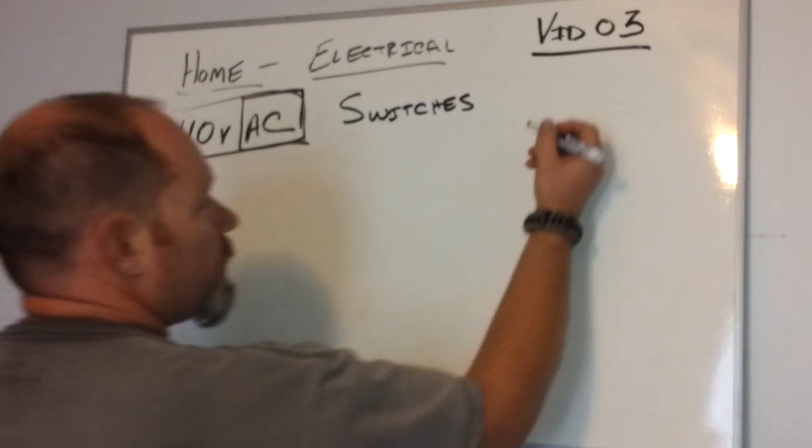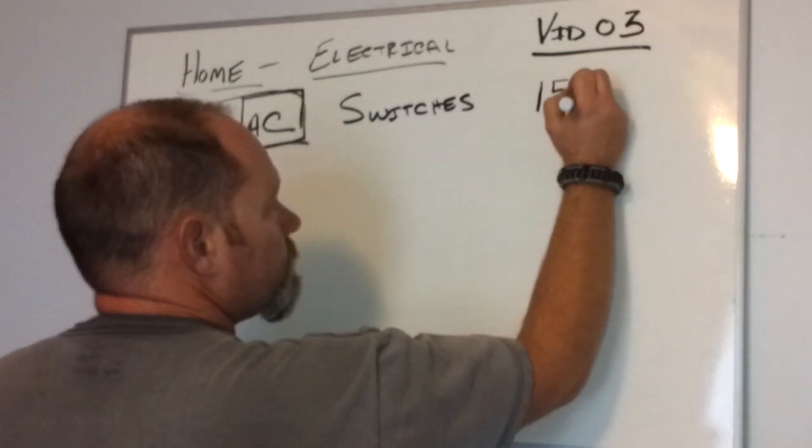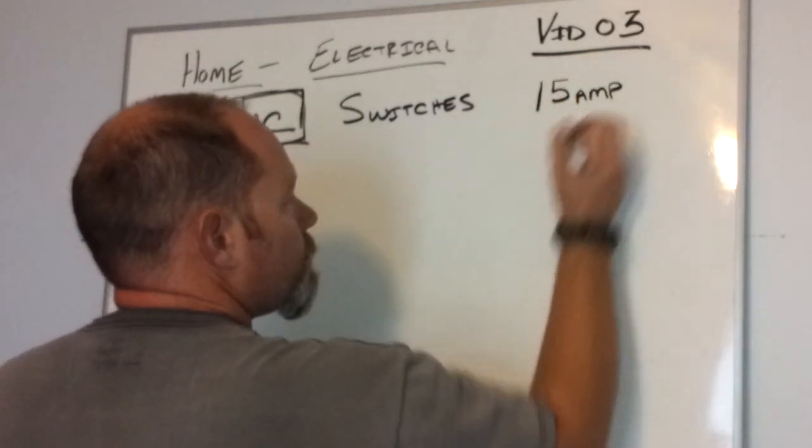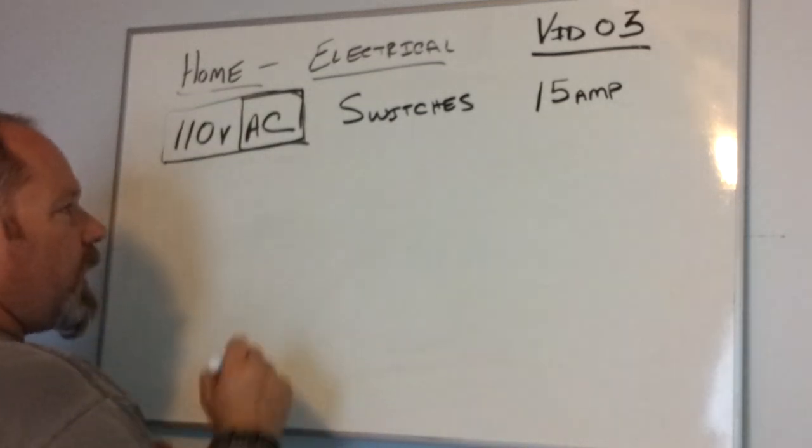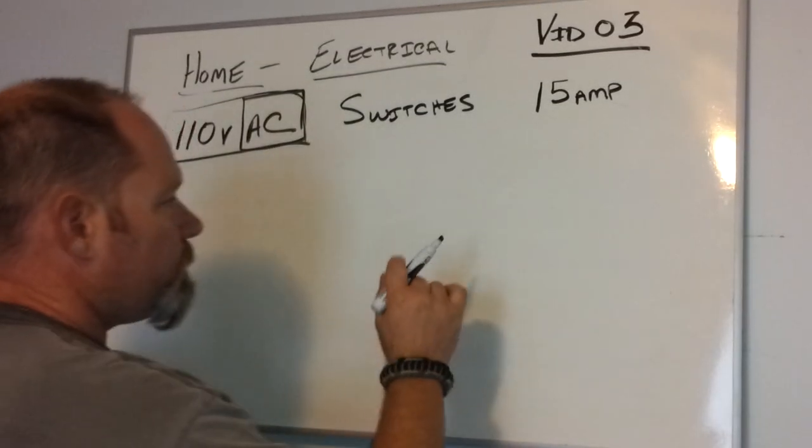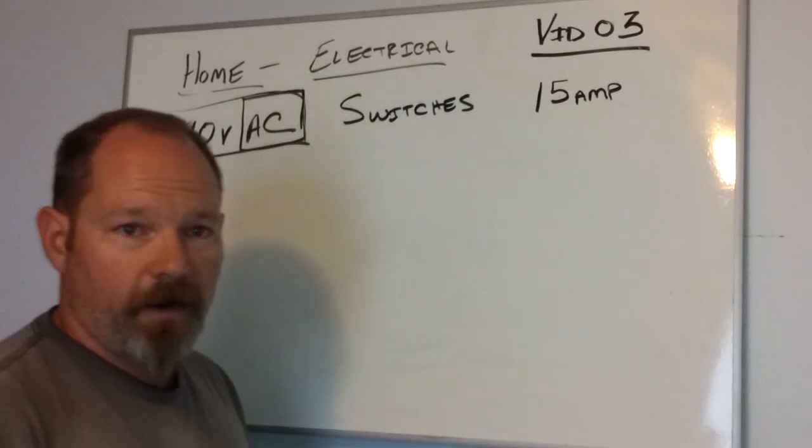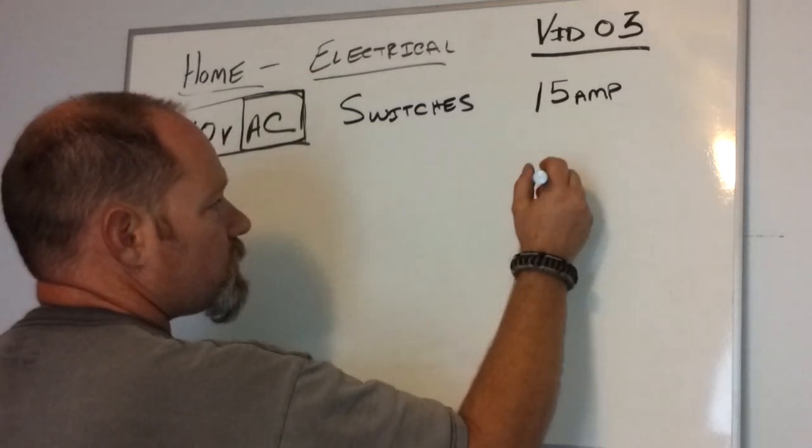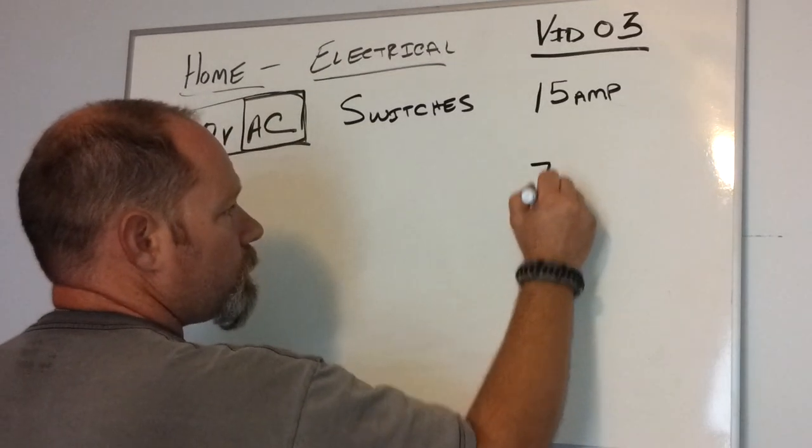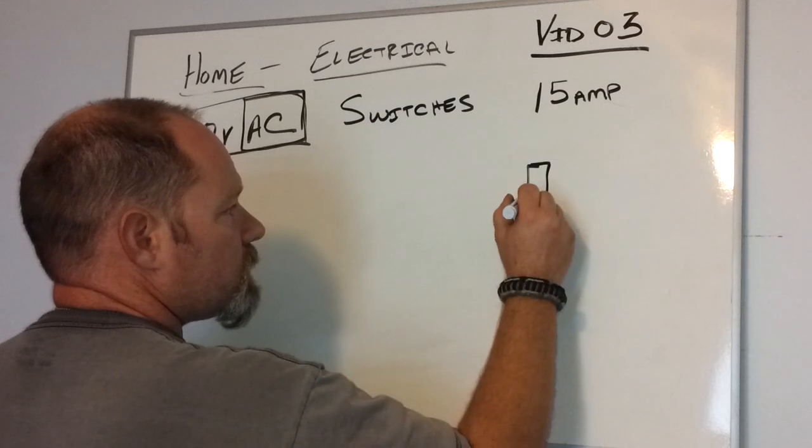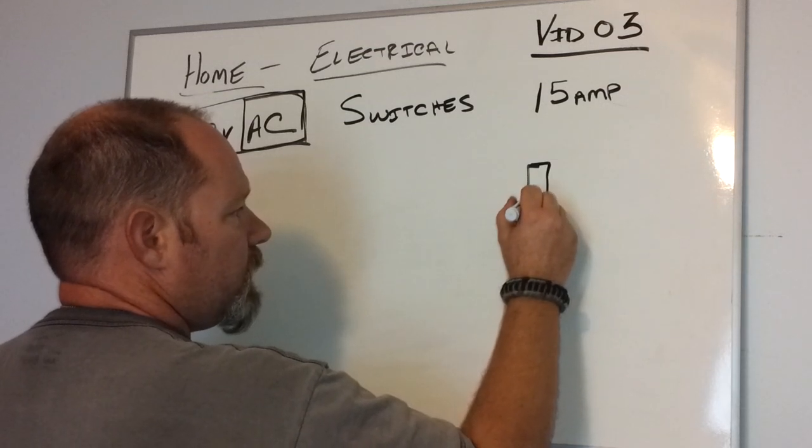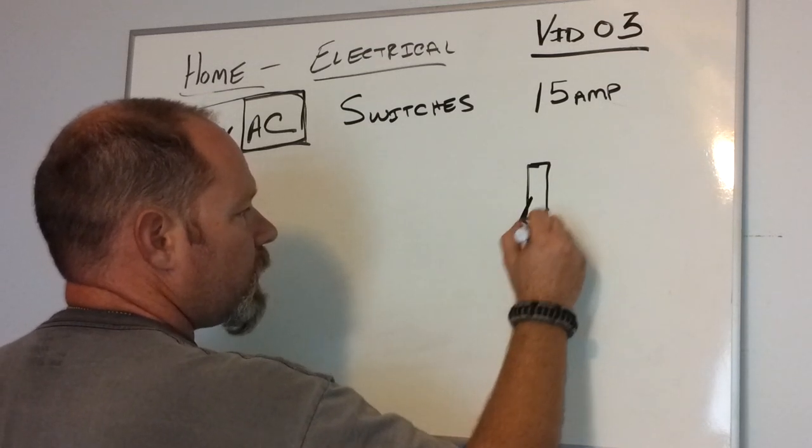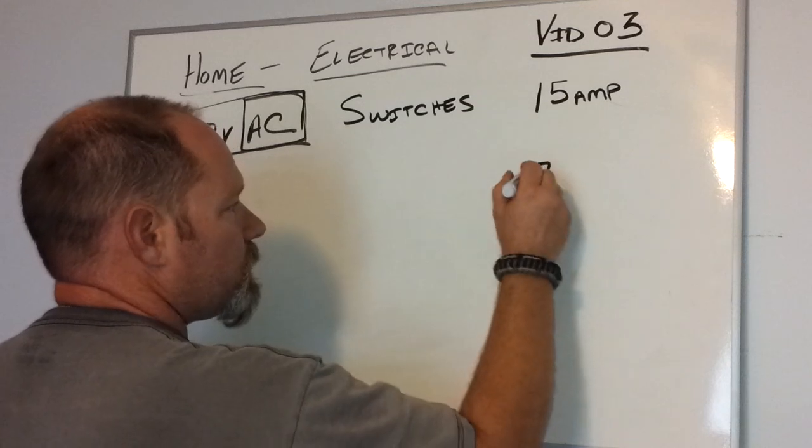Switches are typically ran in a 15 amp circuit. To get into switching, we're going to have to draw a wiring diagram, and it'll be a real simple one. A switch is going to look like this, and it's either going to be in the down position or it's going to be in the up position.